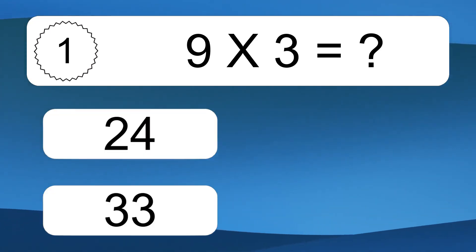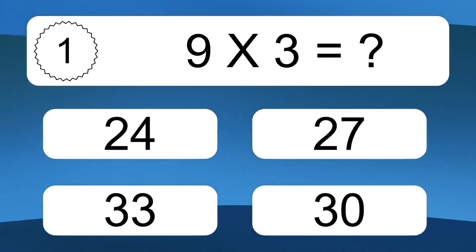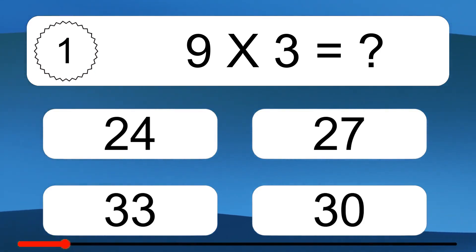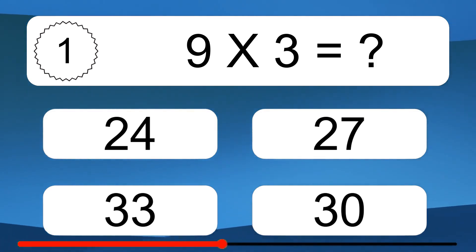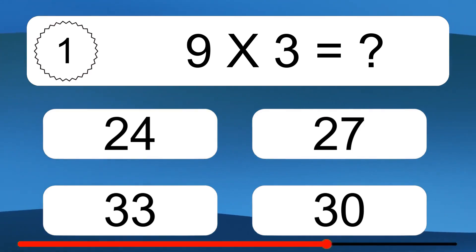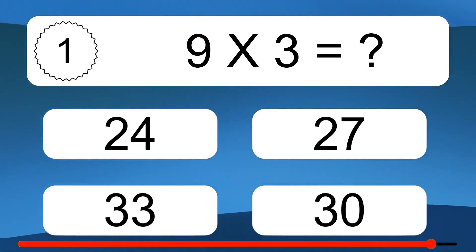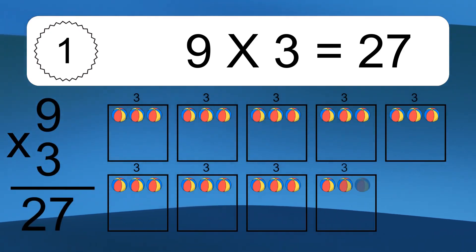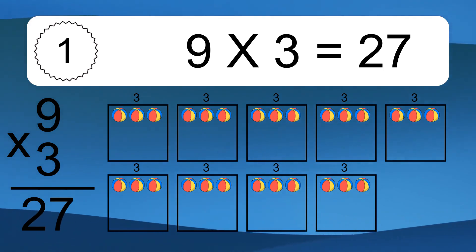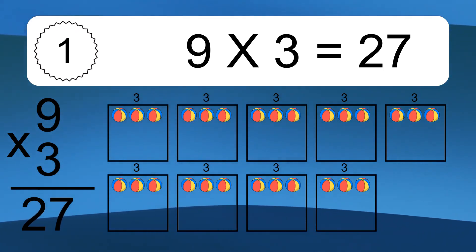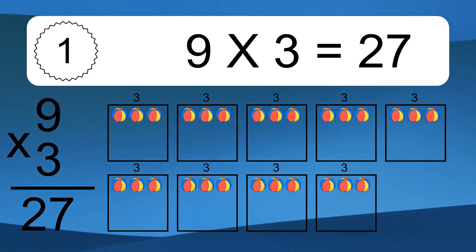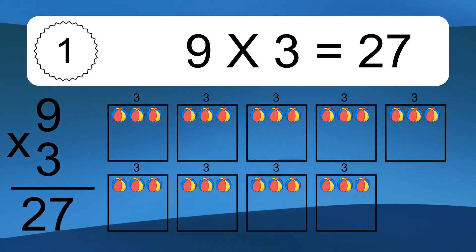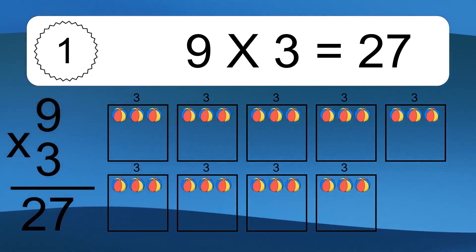9 times 3 equals what? 9 times 3 equals 27. We have 9 boxes, and each box has 3 colorful balls inside. If you count all the balls in all the boxes together, you will have 9 times 3 balls. This equals 27 balls.